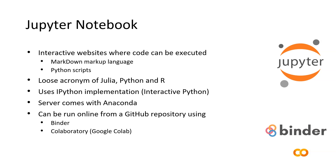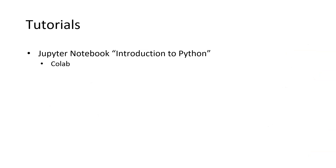If you've installed the Anaconda distribution, you can launch your Jupyter notebooks from your computer and use the libraries that you have installed. We will start, however, with running it online from a GitHub repository for this course. Tools to run Jupyter notebooks online — connecting to the GitHub repository and running on a server — include Binder or Google Colab. In this module, we will use a Jupyter notebook about the introduction to Python. Links are provided in the platform.